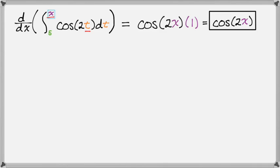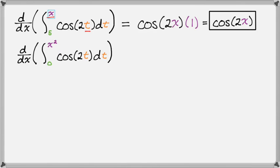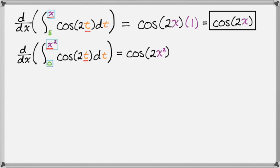The thing that really gets people is the chain rule on this. Let's take a look at another one — it's almost the same thing. We want the derivative with respect to x of the integral from 0 to x squared of cosine of 2t dt. The lower bound needs to be a constant, and it is. We look at the upper bound — it's x squared, a function of x. We replace every variable in the integrand with x squared, giving cosine of 2x squared. Then we multiply by the derivative of the upper bound, which is 2x. So the answer is 2x times cosine of 2x squared.